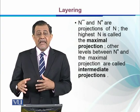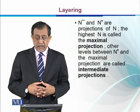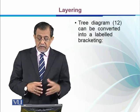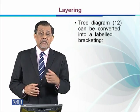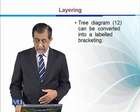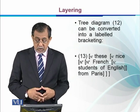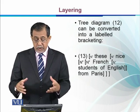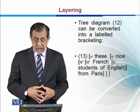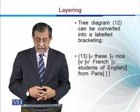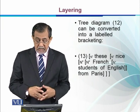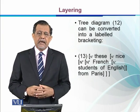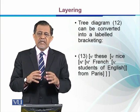The levels between N-bar and the maximal projection are called intermediate projections. The tree diagram we just discussed can be converted into a labeled bracketing representation. So we can write N-double-bar containing 'nice,' 'French,' and then N-bar containing 'student of English from Paris.' Different layers help us understand at what point each constituent was added.